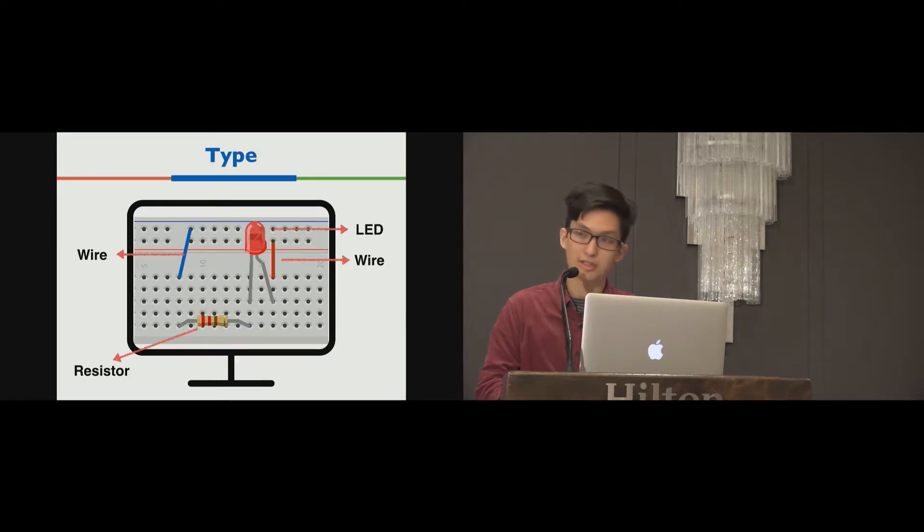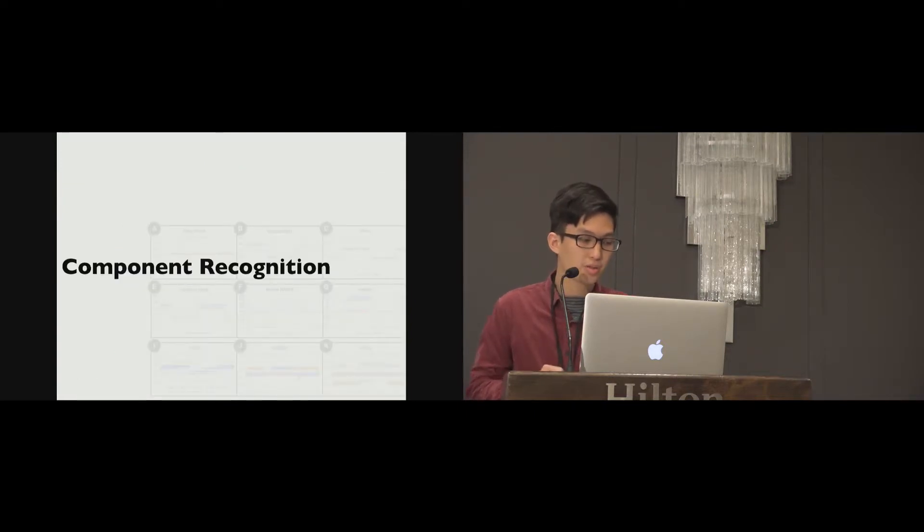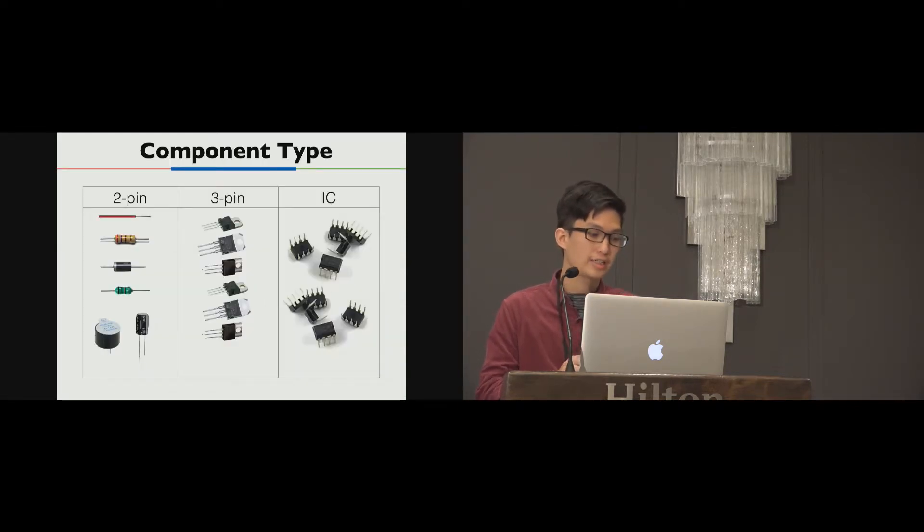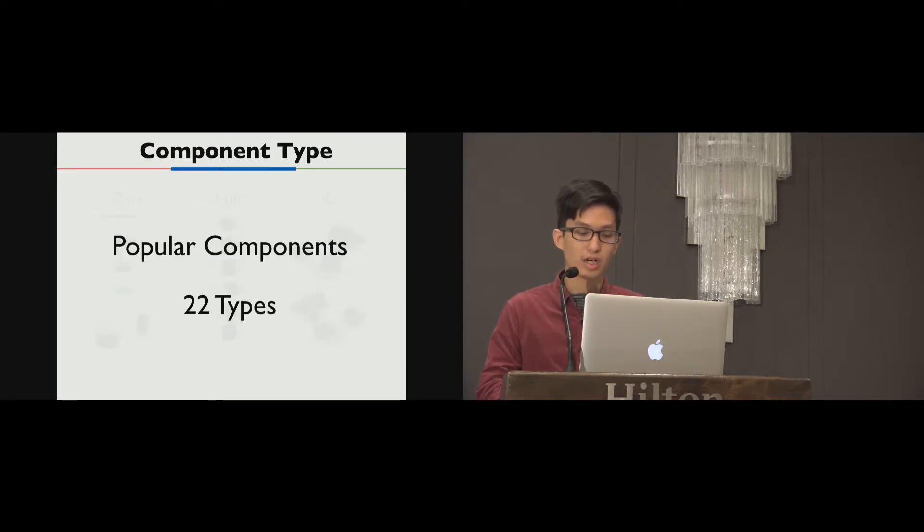So the component locations are good now. Let's move on to component type. In this stage, we develop a component recognition system to identify an electronic component individually. Currently, CircuitSense is able to detect components including two pin, three pin, and eight pin components. Those components are popular components on the website of SparkFun. In total, we picked 22 types of components.